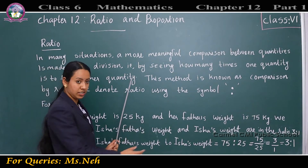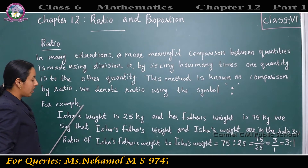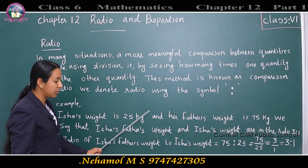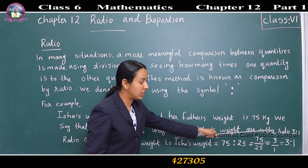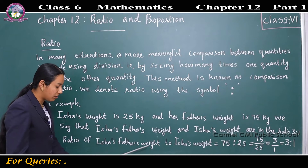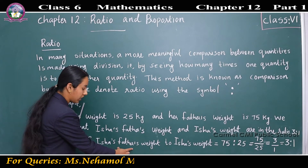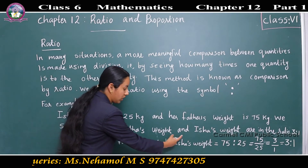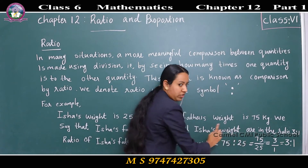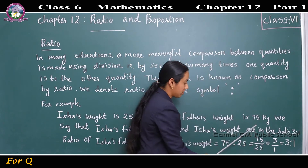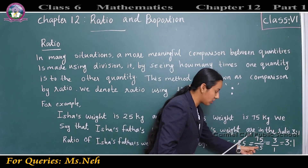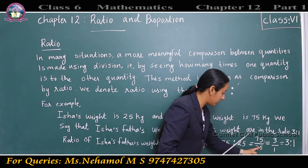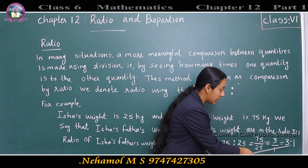We denote ratio using the symbol colon. For example, Isha's weight is 25 kilograms and her father's weight is 75 kilograms. The ratio of Isha's father's weight to Isha's weight is 75 is to 25, which can be written as 75 by 25. Both are divisible by 25: 75 by 25 is 3, and 25 by 25 is 1. So 75 by 25 equals 3 by 1, which is written as 3 is to 1.